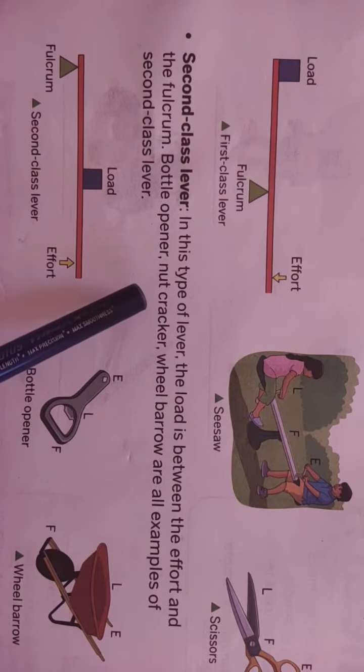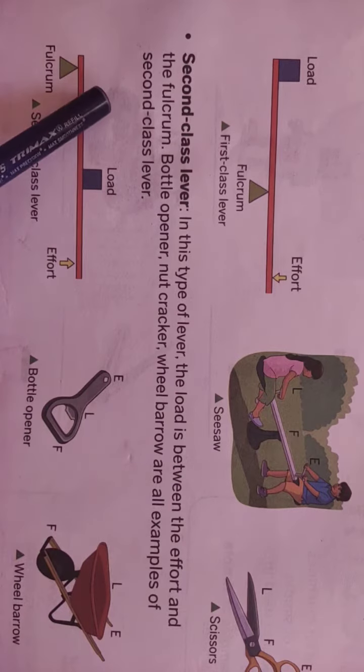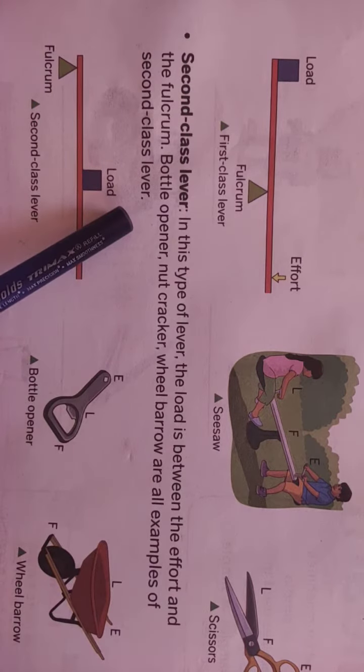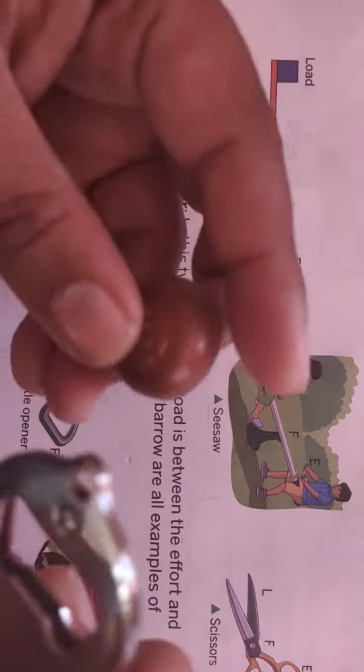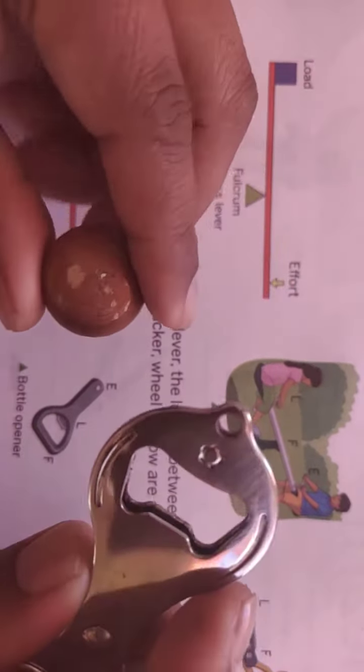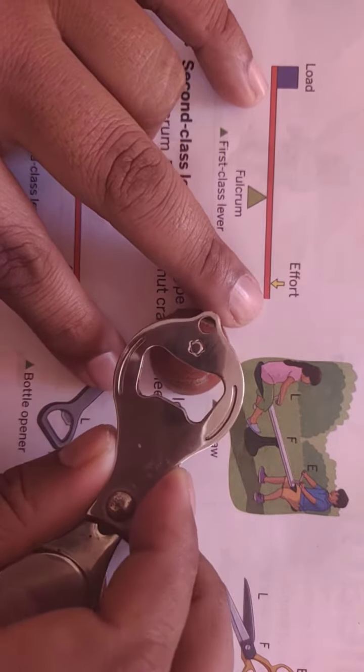Bottle opener, nutcracker, wheelbarrow are examples of second class lever. Over here I am taking this as an example - this is a bottle and I'm trying to open it.